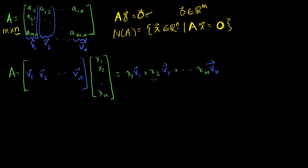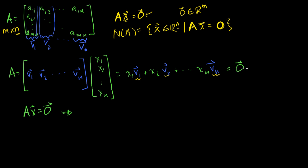Now, if we're saying that Ax equals 0, we're looking for the solution set to that equation. That means this linear combination sum equals the zero vector. We want to figure out the x1's, x2's, x3's, all the way to x_n's that make this equal to the zero vector. What we're doing is taking linear combinations of our column vectors and seeing if we can make some linear combination equal the zero vector.